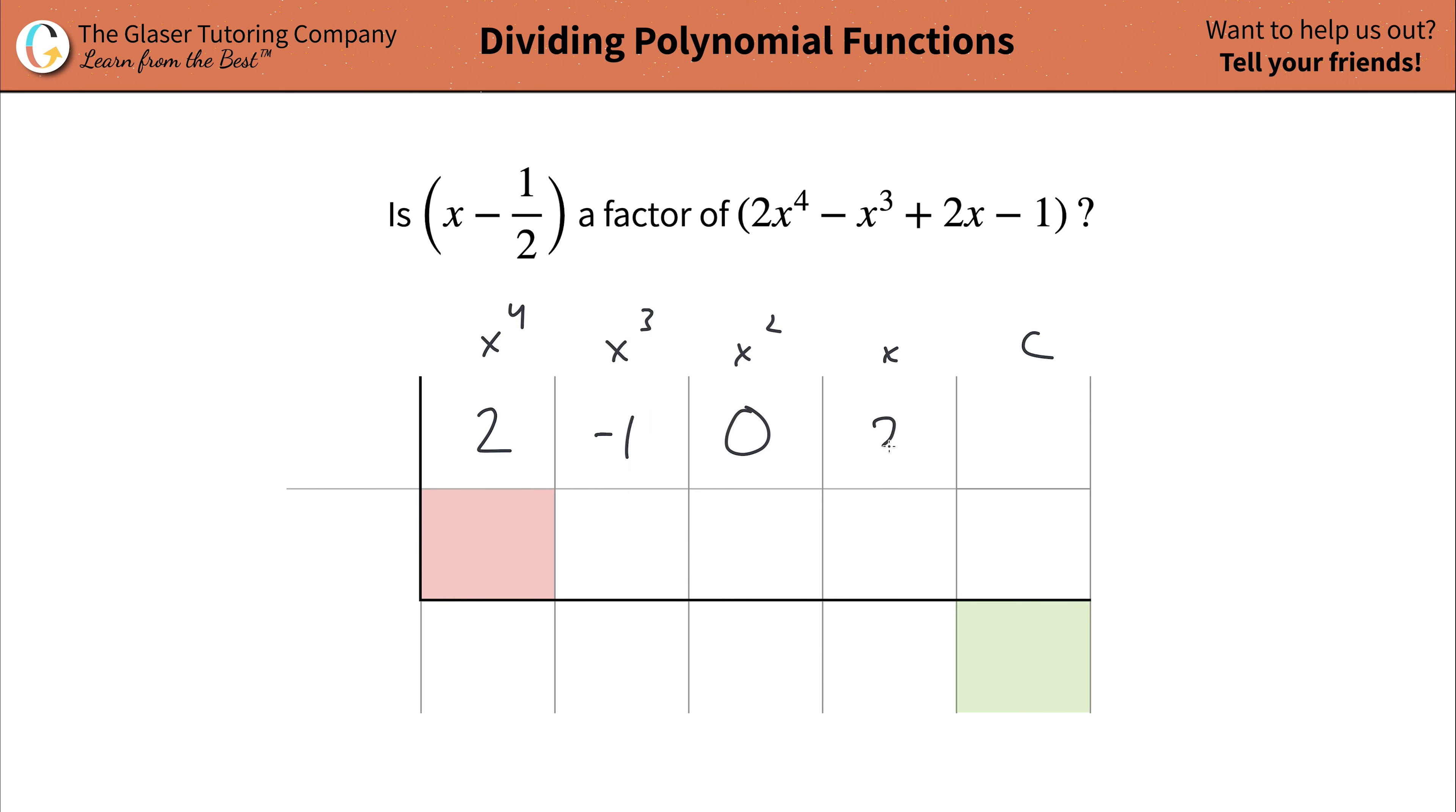Next is going to be your x term. So that's going to be a two. And then your constant here is the negative one. Cool. Now let's just erase this. We don't need it. And let's now go to our divisor. The thing that we're trying to determine whether it's a factor.